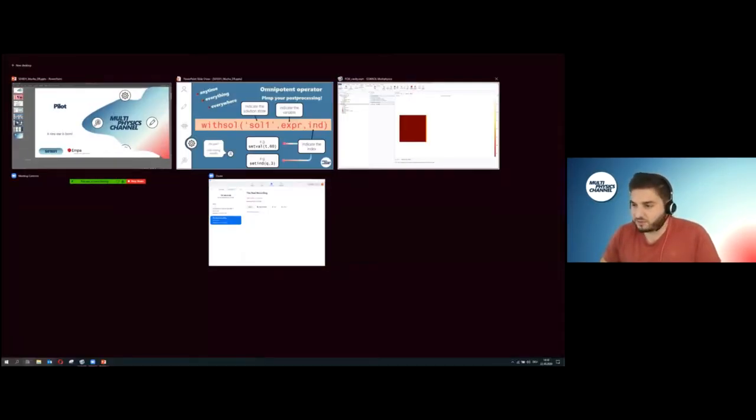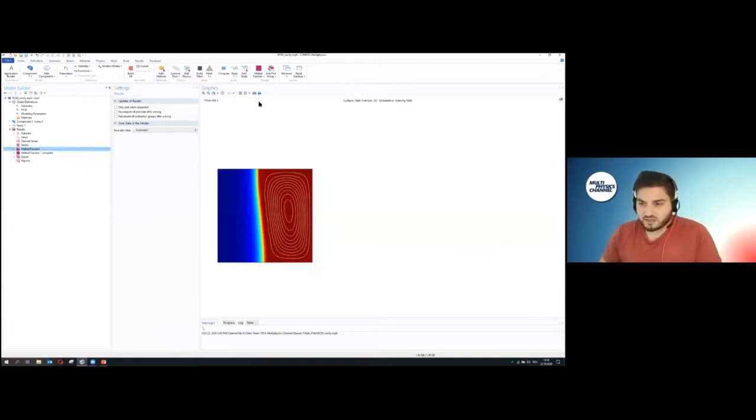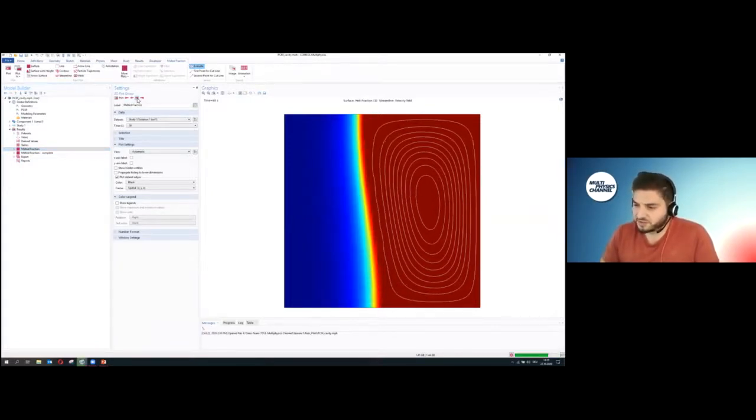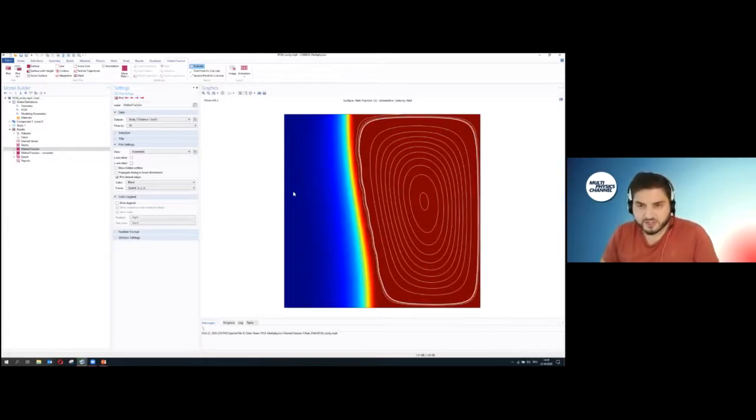I want to show you this model. This is a cavity filled with a PCM, a phase change material. The special thing about phase change materials is that they release a lot of latent heat during the melting or solidification. Here you can study how the interface between molten material and the solid part develops. The interface between those two: blue is solid, red is molten. In the red zone you also have streamlines because of natural convection.